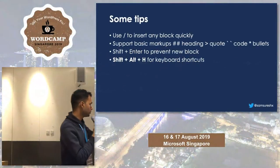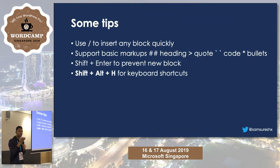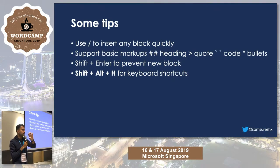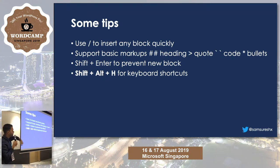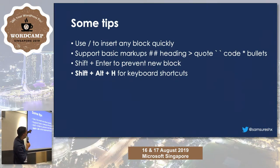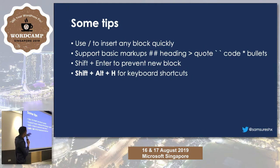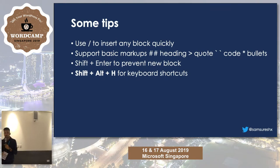Some extra tips for using Gutenberg: you can use a slash to insert blocks instead of pressing the plus button — just type slash and the block name, for example 'Twitter,' and it comes up. Markdown is supported: double hashtag creates a heading, a forward slash quotation mark creates a quote block, and an asterisk creates bullets. Use Shift+Enter to stay in the same block instead of creating a new text block. There are many keyboard shortcuts in Gutenberg, similar to shortcuts in Classic Editor and other software.